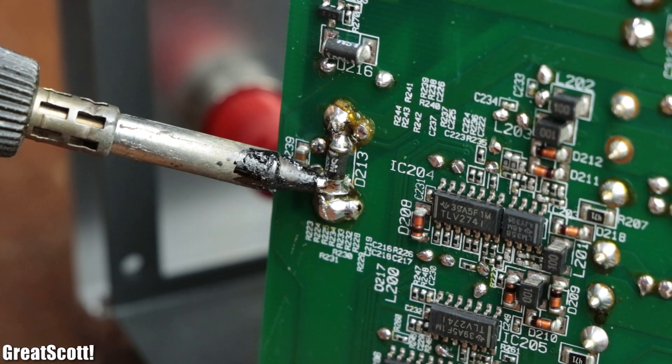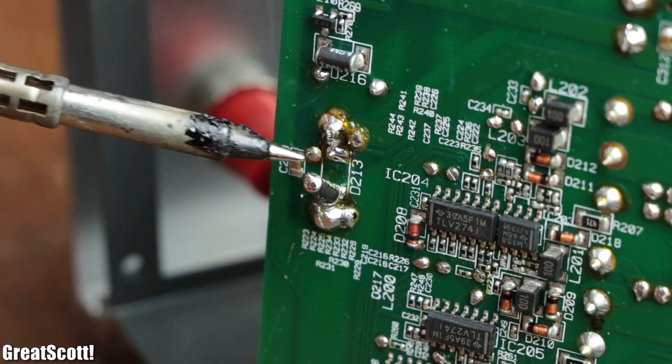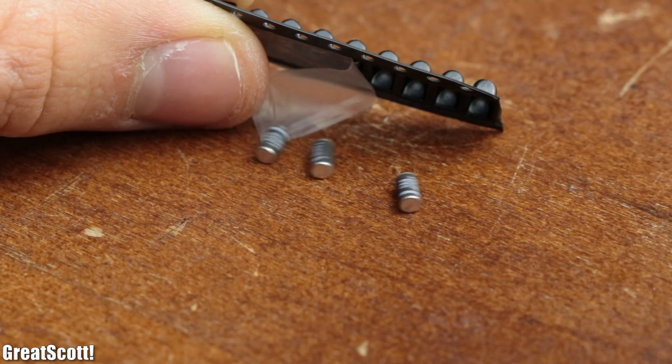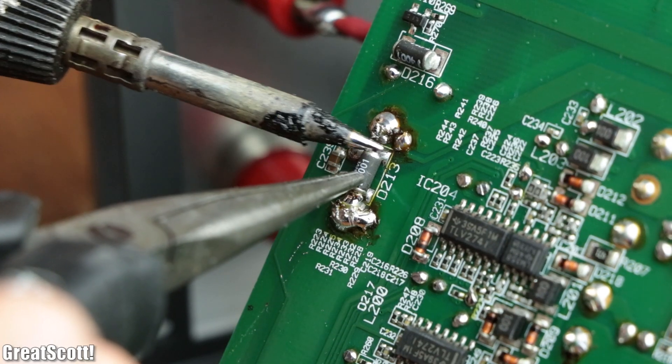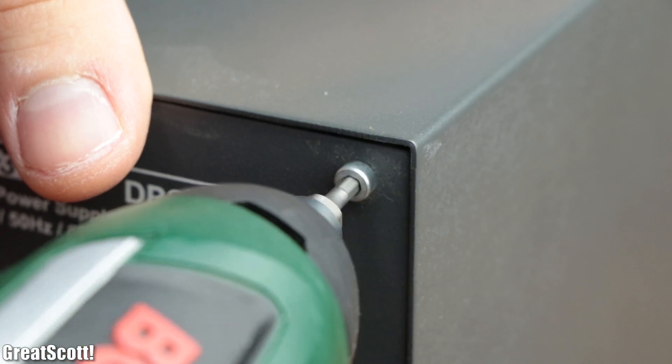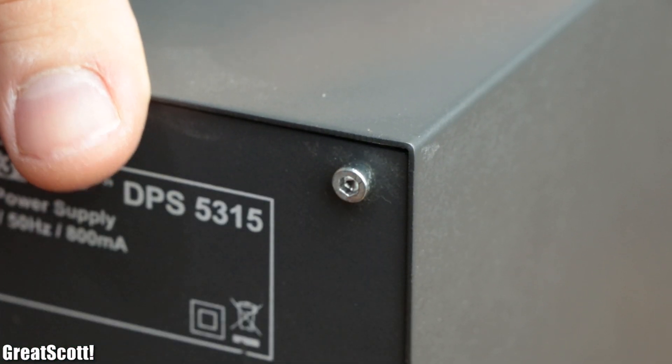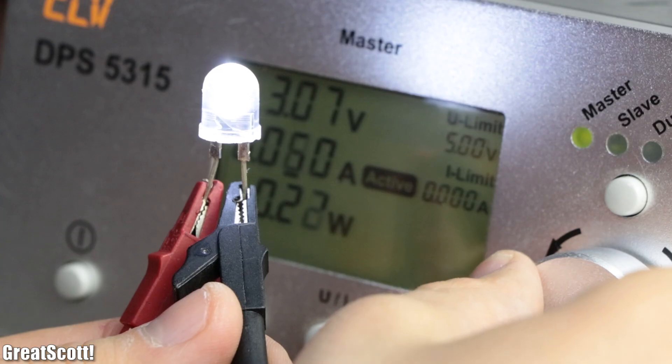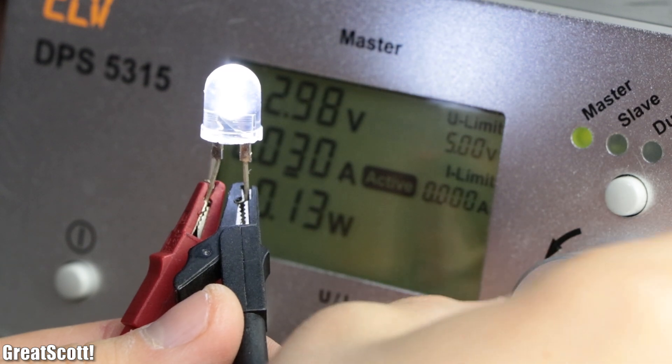So to fix my supply I simply had to desolder the blown up diode, order some new ones of the same type and solder one of them in place. And after reassembling the lab bench power supply and powering it, it seems to function correctly once again. Awesome!